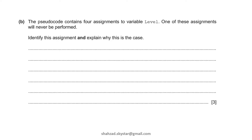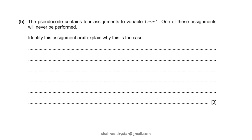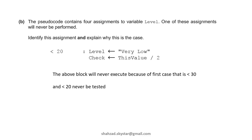The pseudocode part B: the pseudocode contains four assignments to variable level. One of these assignments will never be performed. Identify this assignment and explain why this is the case. The assignment less than 20 will never be performed. Why? Because the first condition is less than 30 — and if any number is less than 30, that condition will be true. Since less than 20 is also less than 30, this will never be executed. For example, if you enter 18, the condition 18 less than 30 is true, so it will not move to the less than 20 branch. That is why this condition will never be executed.